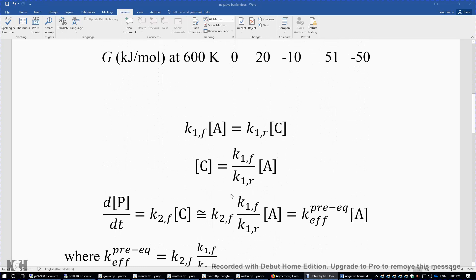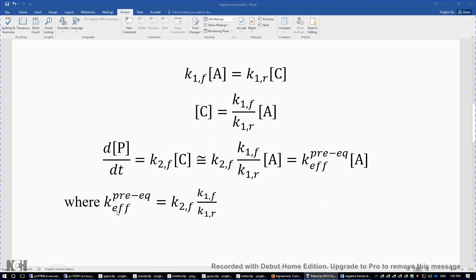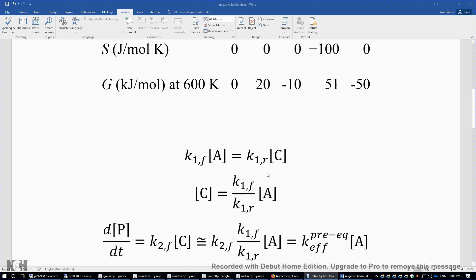We can write out this pre-equilibrium approximation between A and C: K1F times [A] equals K1R times [C]. This is pre-equilibrium approximation. We can express the concentration of C in terms of the concentration of A. Then we know dP/dt, the production rate of P, is equal to K2F times [C]. Again, we neglect the consumption of P here because K2R is extremely small.